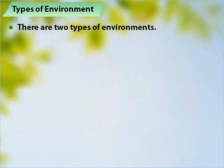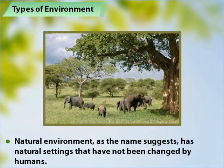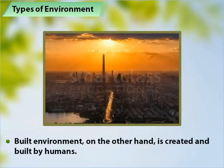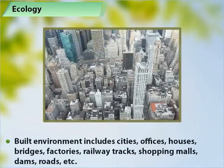There are two types of environment: natural and built. Natural environment, as the name suggests, has natural settings that have not been changed by humans. Built environment, on the other hand, is created and built by humans. Built environment includes cities, offices, houses, bridges, factories, railway tracks, shopping malls, dams, roads, etc.